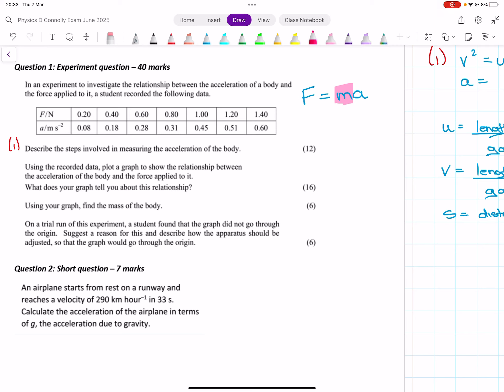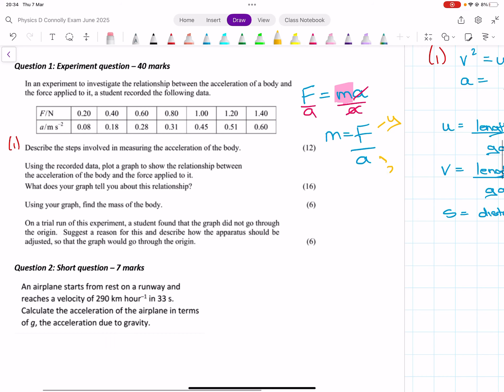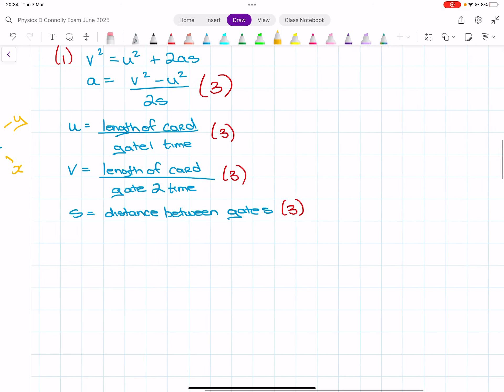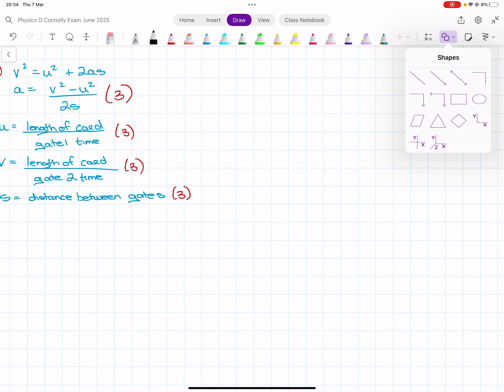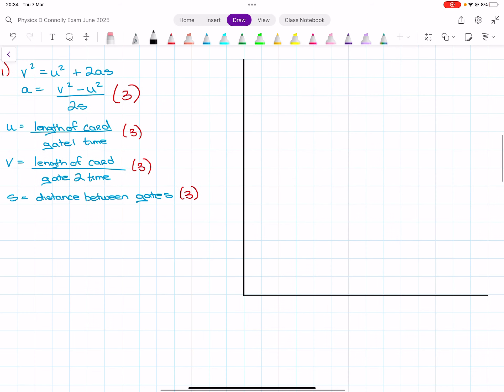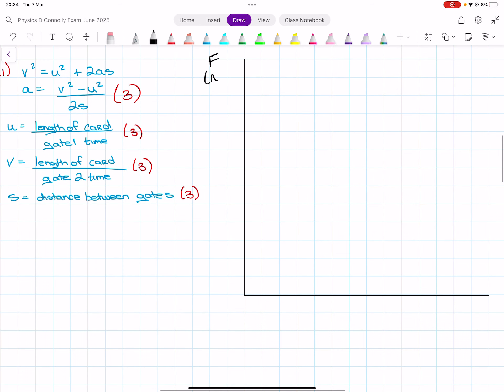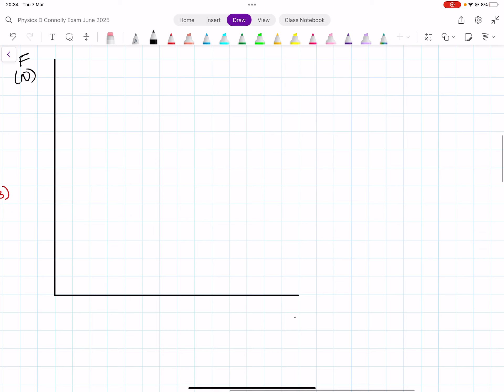Isolate m. So, we divide by a, divide by a. So, m equals f over a. That means this goes on the y-axis and this goes on the x-axis. So, we'll do a graph. What did I say? F in newtons and a in meters per second squared.